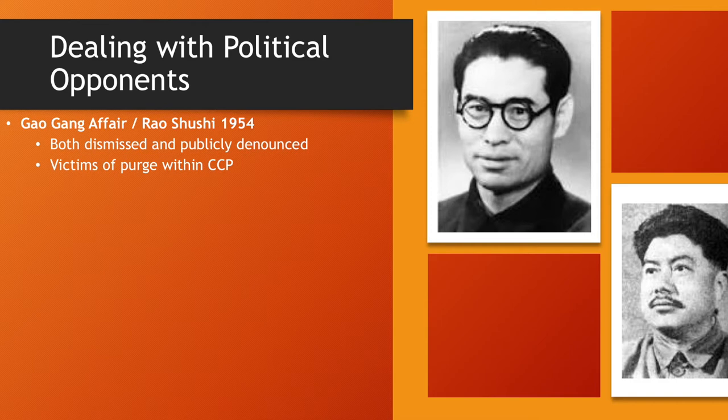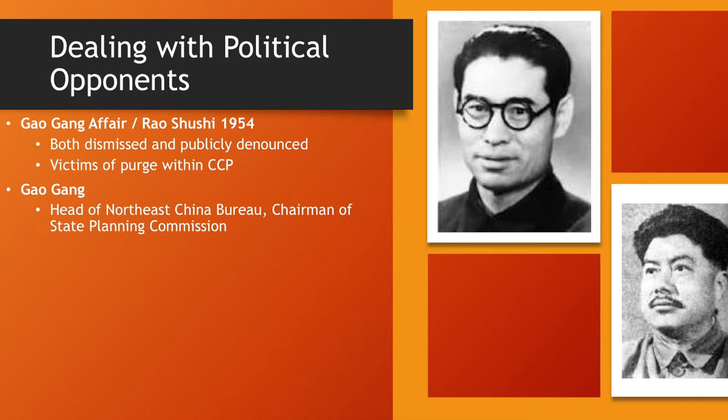These two individuals had very high positions within the party. Gaogang was head of the Northeast China Bureau and chairman of the State Planning Commission — a very high position. He was indicted for trying to establish an independent kingdom in Manchuria, and he committed suicide before they could do anything to him.